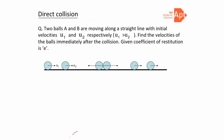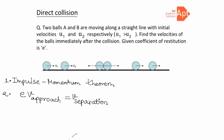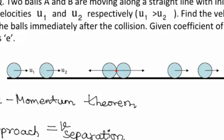In this topic we will discuss two things: first, the application of the impulse-momentum theorem, and second, the concept of collision, i.e., e times velocity of approach equals velocity of separation. When these two bodies collide, the point of contact is the point of impact, the common tangent is defined at that point, and the line perpendicular to it is the line of impact.